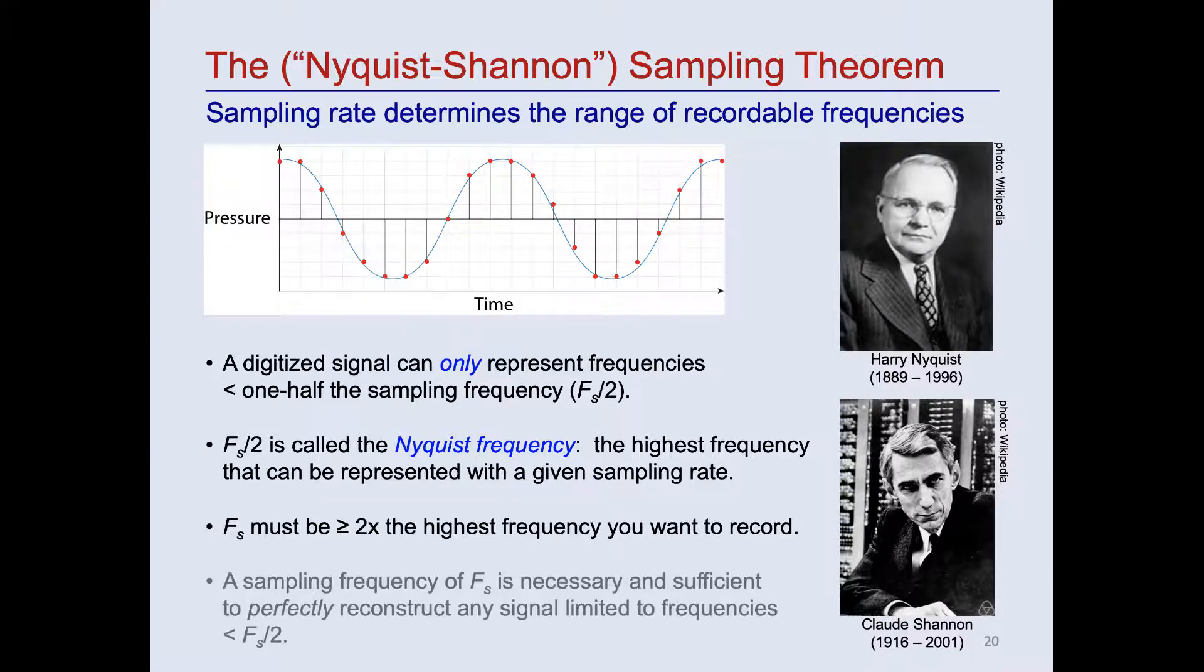Finally, the sampling theorem also tells us that a sampling frequency of f sub s is both necessary and sufficient to perfectly reconstruct any signal limited to frequencies less than half the sampling rate, or f sub s over 2. In other words, in terms of accuracy of the reconstruction of a signal, there is no advantage to recording at sample rates faster than two times the highest frequency of the sound to be recorded.